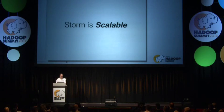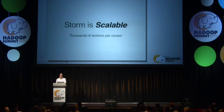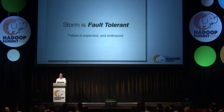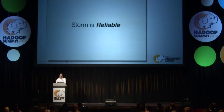Storm is fast. Storm has been clocked at processing 100 million-plus messages per second per node. Storm is scalable, scaling to thousands of workers per cluster. Storm is fault-tolerant — failure is expected and embraced. Storm is reliable: it guarantees message delivery and supports both at-least-once and exactly-once semantics.